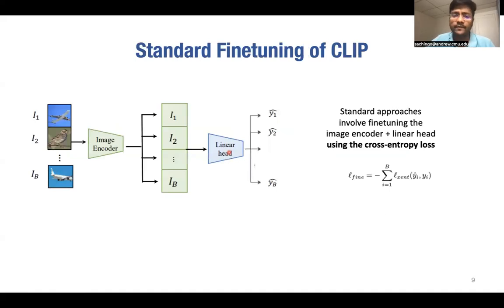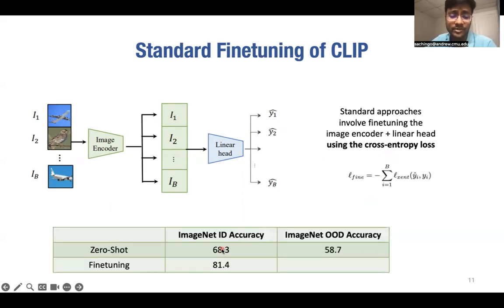And the way this fine-tuning is done is by using the standard cross-entropy loss. We take the image encoder of CLIP, add a linear head, and optimize the cross-entropy loss on the labeled training dataset. And this indeed gives state-of-the-art accuracies. For example, on ImageNet, the ID accuracy improves from 68% to 81%. In fact, when using a larger CLIP model, it gives the current state-of-the-art on ImageNet of 91%. So, what's the issue?